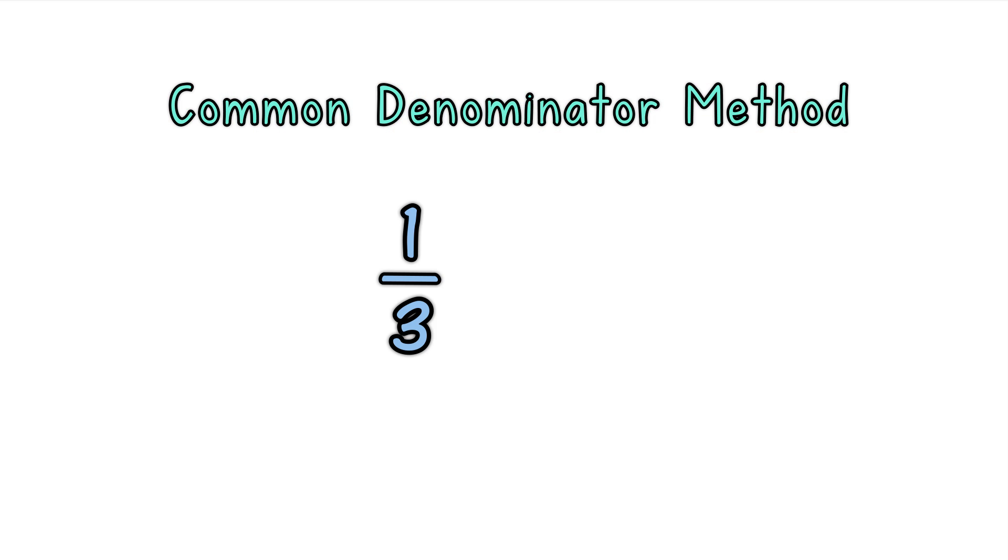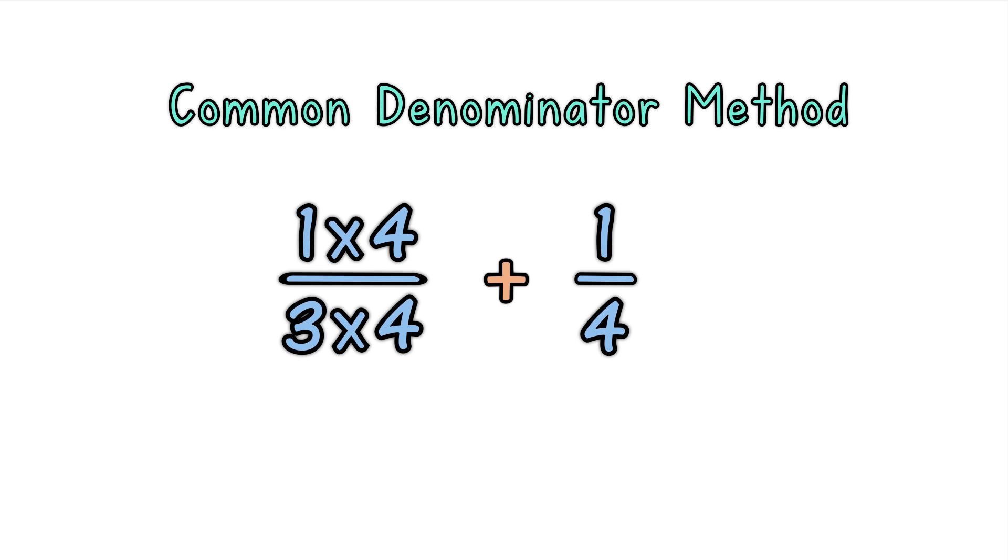We need to add 1/3 and 1/4. First, make the bottom numbers, the denominators, the same. Multiply top and bottom of 1/3 by 4, and multiply top and bottom of 1/4 by 3. Now do the calculations.